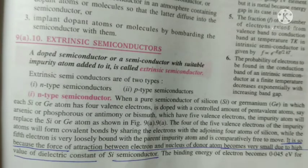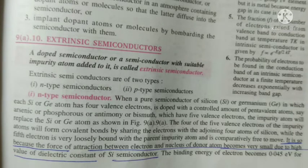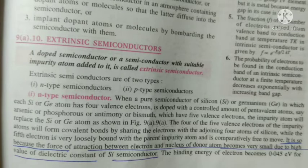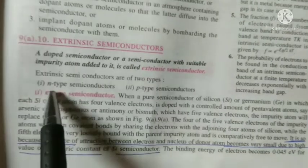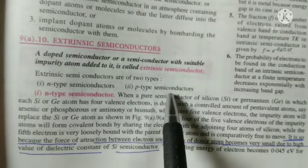When an impurity atom is added to the pure semiconductor, then it will become the extrinsic semiconductor. The extrinsic semiconductors are of two types: N-type semiconductor and P-type semiconductors.